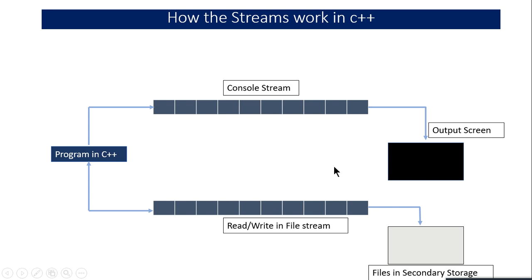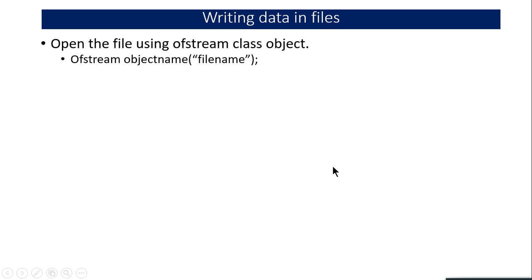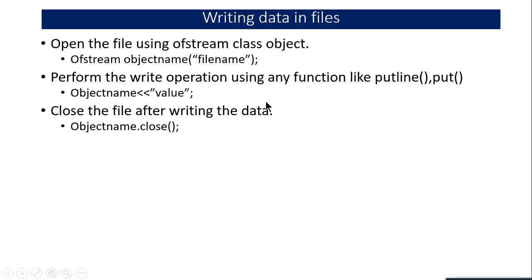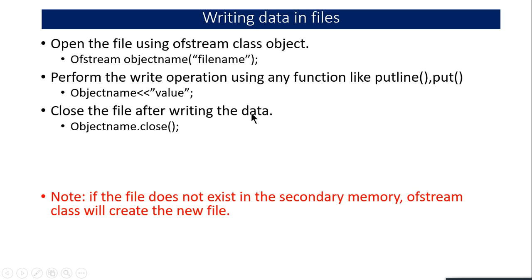Streams represent the flow of data from the program to secondary storage files or to the output screen. Now let's start with writing data in files. If you want to write data in a file, you have to open it using ofstream and you can use the cout insertion operators to store data in the file. If you have opened the file using the object name f1, using f1 and the insertion operators you can put the value in the file, or you can use functions like put and putline.